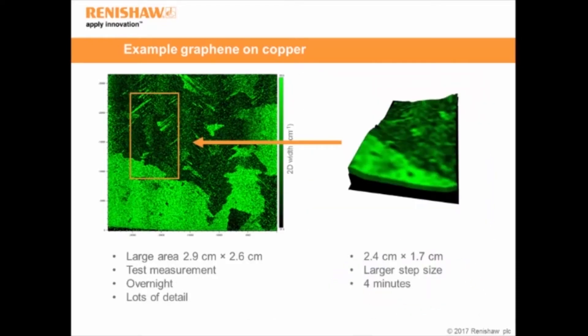That measurement was a long measurement — I set it going overnight. We're able to get lots of detail, but it's not really suitable for quality control of graphene because it simply takes too long. As a follow-up, I looked at just a 2.4 by 1.7 cm segment, ran a slightly larger step size, and we were able to get similar information in just 4 minutes. This really emphasises that because we're able to use LiveTrack, we can use very high magnification objective lenses, which gives us lots of Raman signal, allowing us to scan very fast. There are lots of benefits with this technique.